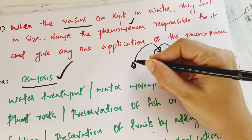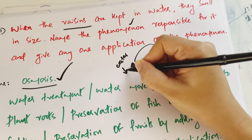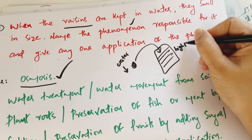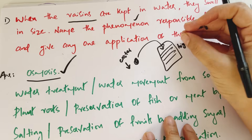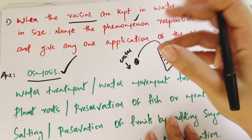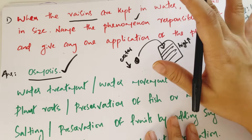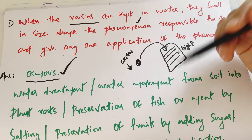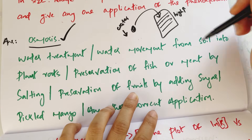The raisin has a lower water content. When placed in water, which has higher water concentration, the water moves in. This movement of water across a semi-permeable membrane is called Osmosis.